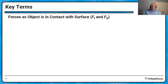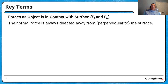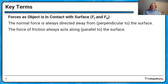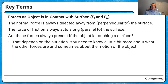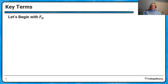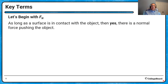Now the other contact forces. Two forces associated with surfaces are the normal force and the frictional force. The normal force is always directed away from a surface, perpendicular to it. Friction always acts parallel to the surface. Whether these forces are present depends on the situation — you need to know a little more about the problem to decide.